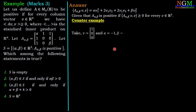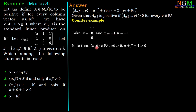Let us take the counterexample v = (1, 0, 0) with α = -1 and β = -1. Note that (α,β) = (-1,-1) belongs to R², and αβ = (-1)(-1) = 1 > 0, and α + β + 4 = -1 - 1 + 4 = 2 > 0. So this pair satisfies both conditions stated in options 2 and 3.